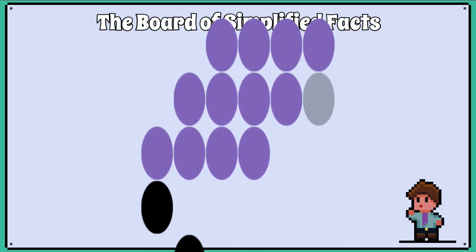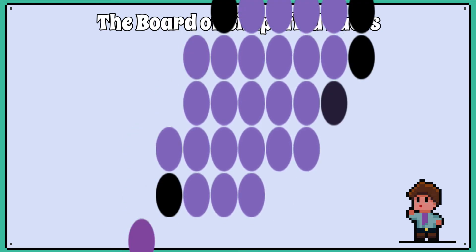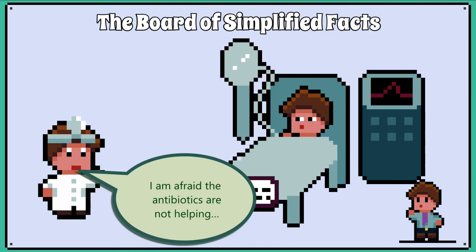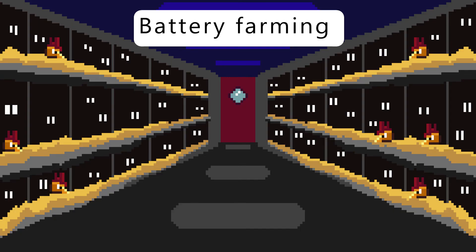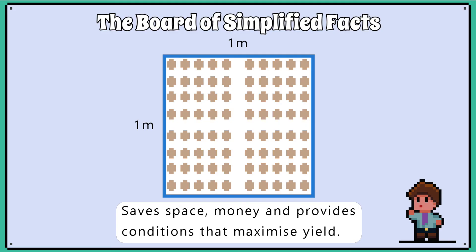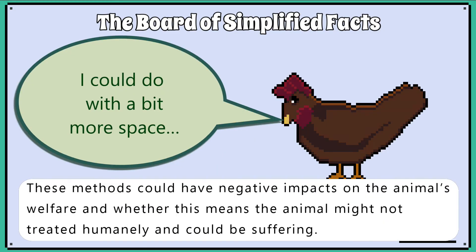The worst case scenario is that we are left with bacteria that can cause infections and the antibiotics no longer work. Battery methods involve having animals living in very close proximity to each other to maximise the space available to the farmer, with the aim of getting as much animal produce per square metre as possible. These methods can have negative impacts on animal welfare, meaning the animal may not be treated humanely and is suffering.